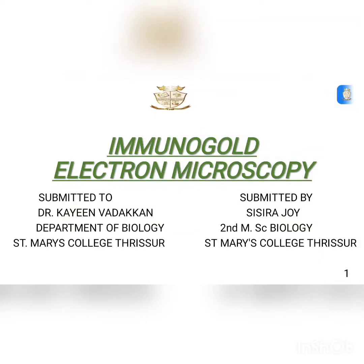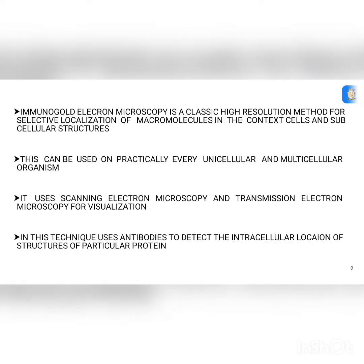Hi, I'm Shishira Joy, a second MSc Biology student at St. Mary's College, Thrissur. We're discussing immuno gold electron microscopy, which is a classic high-resolution method for selective localization of macromolecules in the context of cells and subcellular structures. This technique can be used on practically every unicellular and multicellular organism.